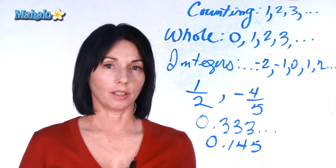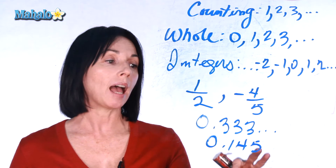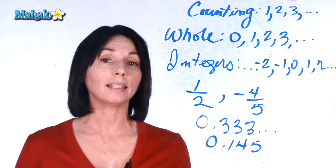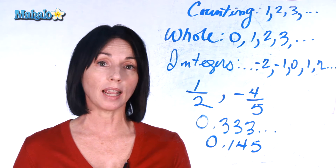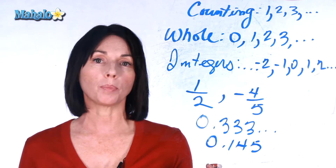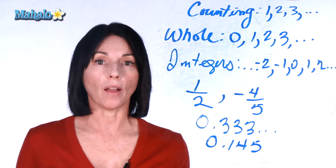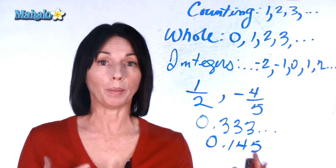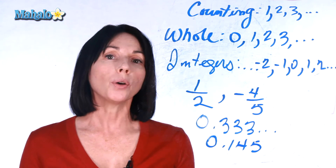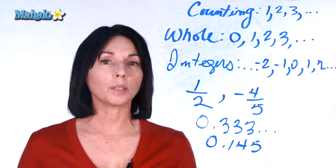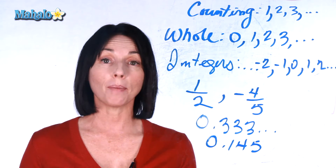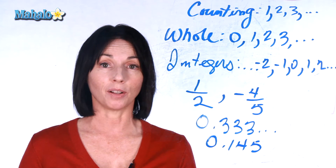Irrational numbers are numbers that don't have terminating or repeating decimal representations. It means that their decimal representations just go on forever, and they never repeat, and they never end. Those numbers can't be expressed as an integer over an integer, and that makes them irrational.